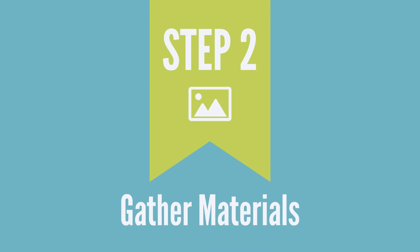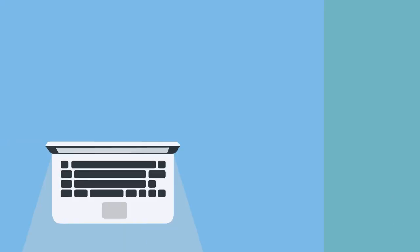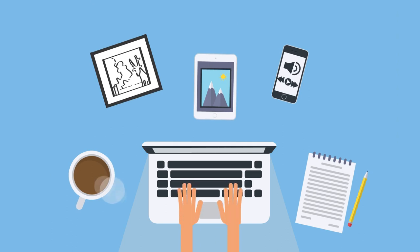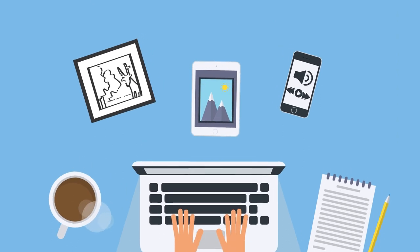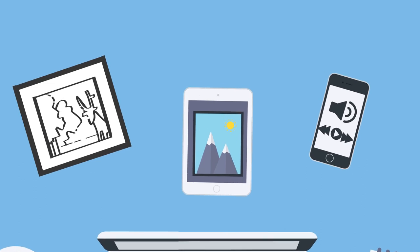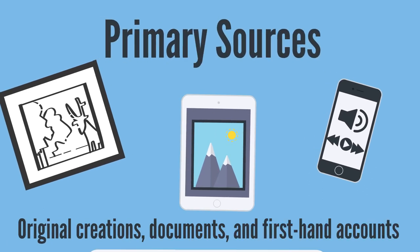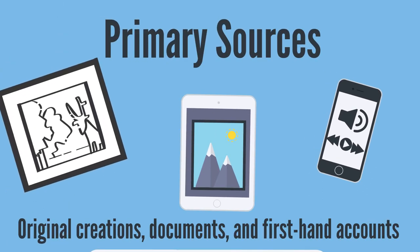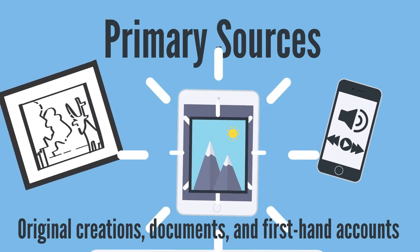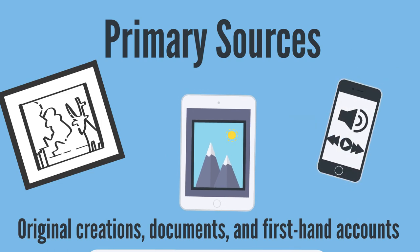Once you develop an idea, you'll need to think about the content and materials for your narrative. Depending on the topic you choose, you may need to conduct supporting research. If you are telling a digital story based on your own life experience, you may want to use primary sources such as your own photographs, digital images, audio recordings, videos, or interviews.